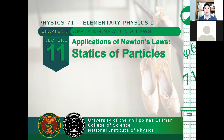For Newton's second law, we obtained the idea that the net sum of all external forces acting on a particle gives rise to an acceleration in a certain direction. The larger the mass of the object, or the larger the inertia of an object, the smaller the acceleration will be. So the proportionality constant between net force and acceleration is the mass.